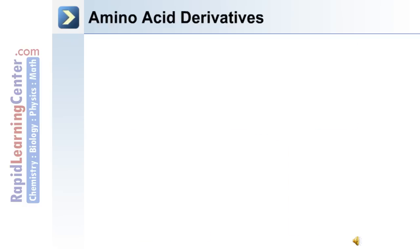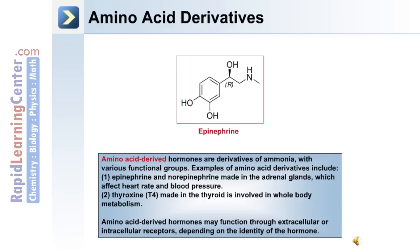The following are examples of hormones derived from amino acids. Examples of amino acid derivatives include epinephrine and norepinephrine and thyroxin. Epinephrine and norepinephrine are made in the adrenal glands and affect heart rate and blood pressure. Thyroxin, or T4, is made in the thyroid and is involved in whole body metabolism. Amino acid derived hormones may function through extracellular or intracellular receptors, depending on the identity of the hormone itself.